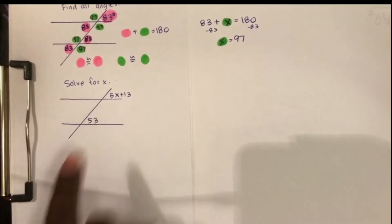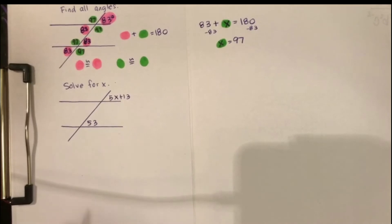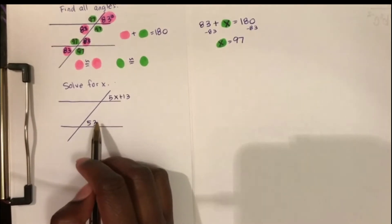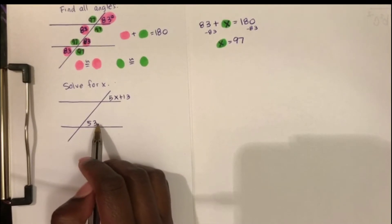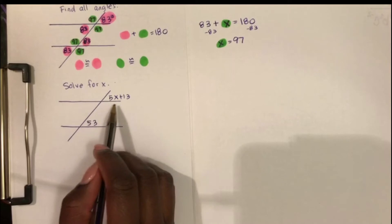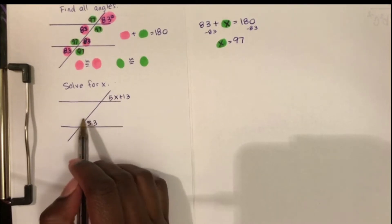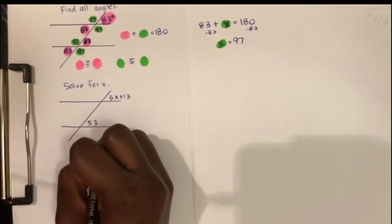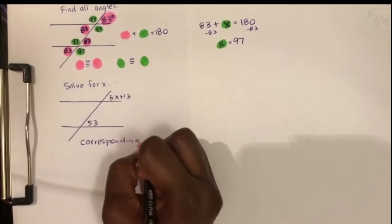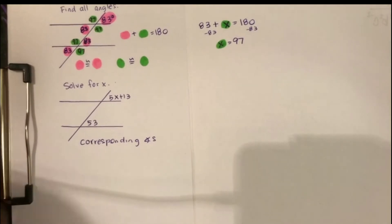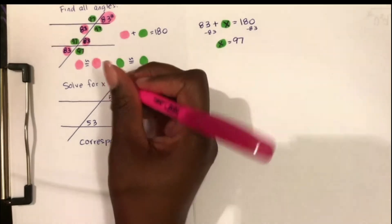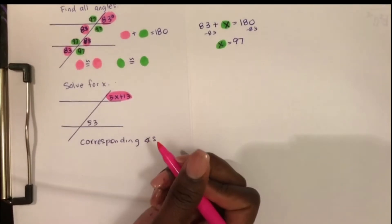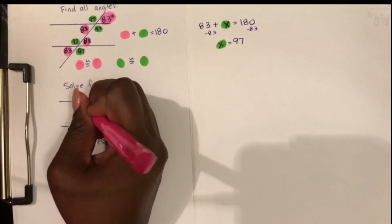For the second example, I'm going to do the same thing. But before I do the color coding, let's talk about the angle relationship between the two angles they gave us. These angles are both in the top right corner of their intersections — this one's in the top right corner, and this one's in the top right corner. Angles in matching corners are called corresponding angles.